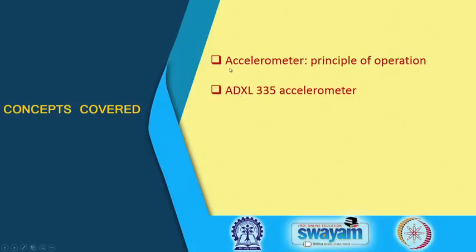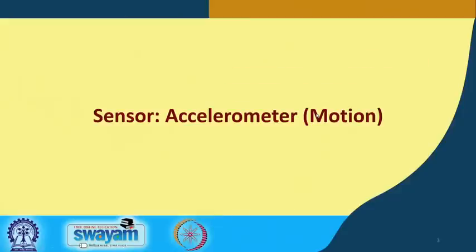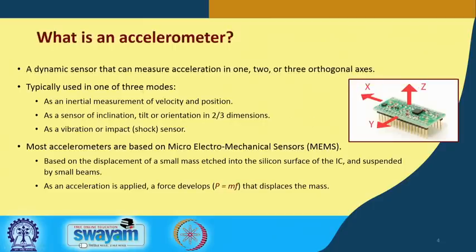In this particular lecture I will be discussing the principle of operation of the accelerometer. The accelerometer I will be discussing is the ADXL335 accelerometer. An accelerometer is defined as a dynamic sensor that can measure acceleration in 1, 2, or 3 orthogonal axes — that is X, Y, and Z.